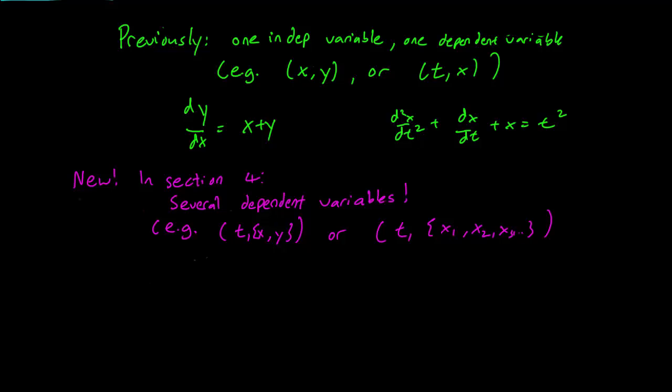A system of differential equations is something like this. It's of the form dy/dt equals 2x plus 3y, or maybe dx/dt equals x minus 2y. So this is an example of a system of differential equations.